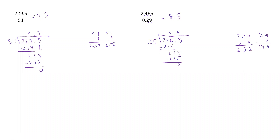Combining 29 times something to get close to 246, I thought 9 was going to give too much, so I tried 8 and got 232. Then I asked 29 times what? Well, 5 times 9 gives 45, and it worked out to 145. Sometimes it's just playing around so you can figure out the answers without multiplying a bunch of different numbers.